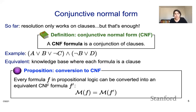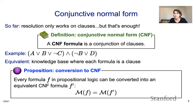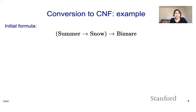Every formula written in propositional logic can be converted into a conjunctive normal form, where the models of the old formula exactly equal the models of the new formula. It's a straightforward recipe for converting every formula to CNF — let's look at an example.